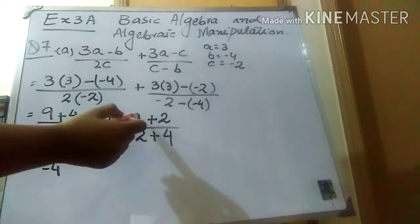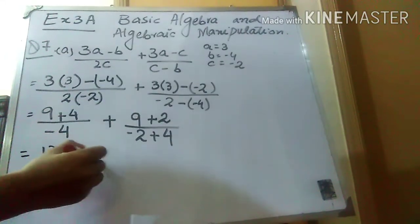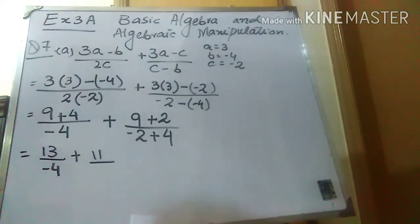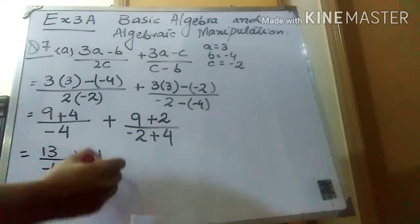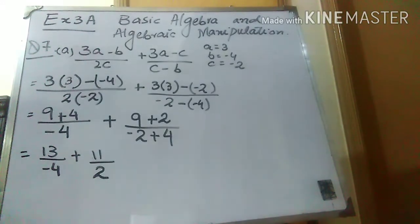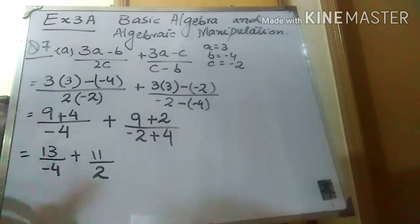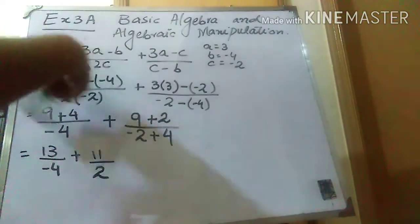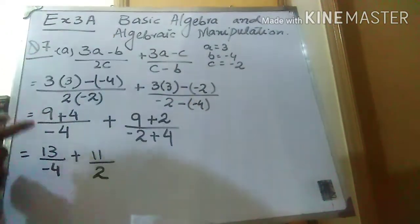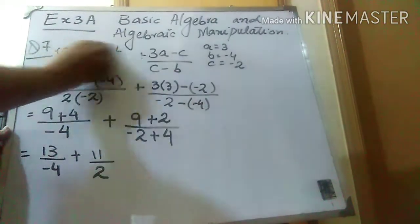Now solve: 9 plus 4 is 13, and minus 4 stays. Then 9 plus 2 is 11, and in the denominator plus minus is minus — meaning subtraction — subtract 2 from 4 to get 2. So the expression becomes 13 over (minus 4) plus 11 over 2. Since we have fractions with a plus sign between them, we need to take the LCM. I'm going to erase the upper portion — I hope you have noted till here.